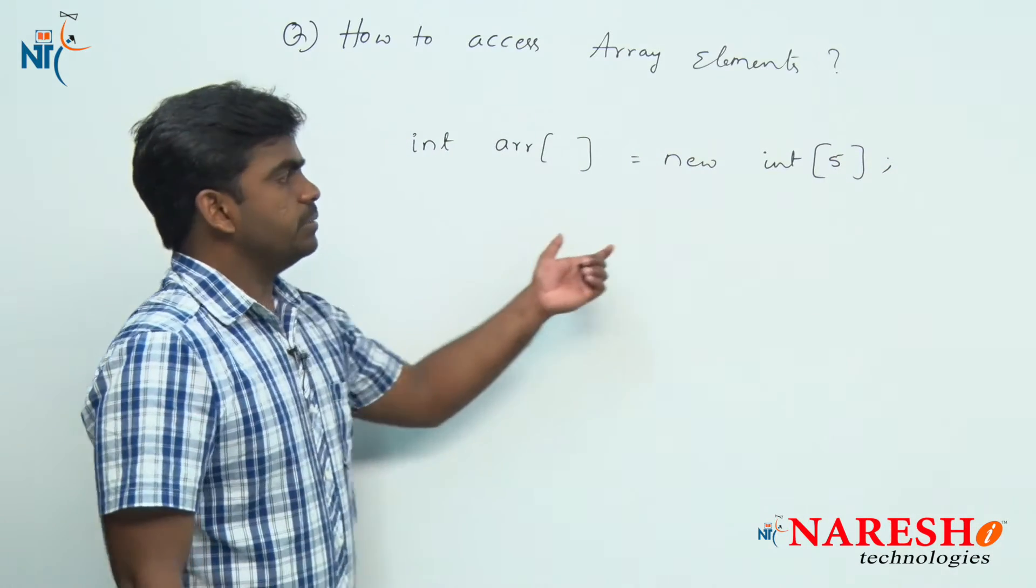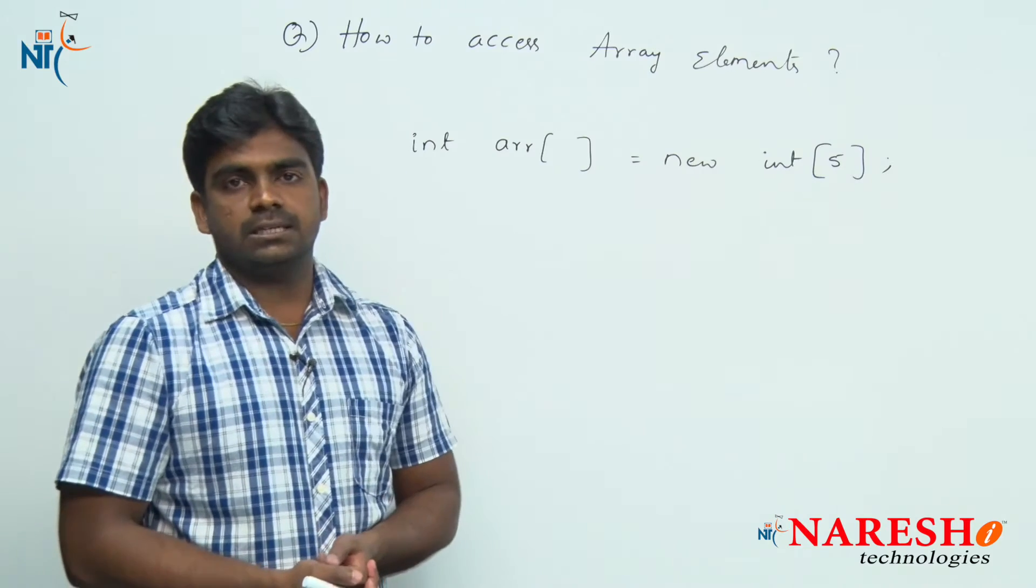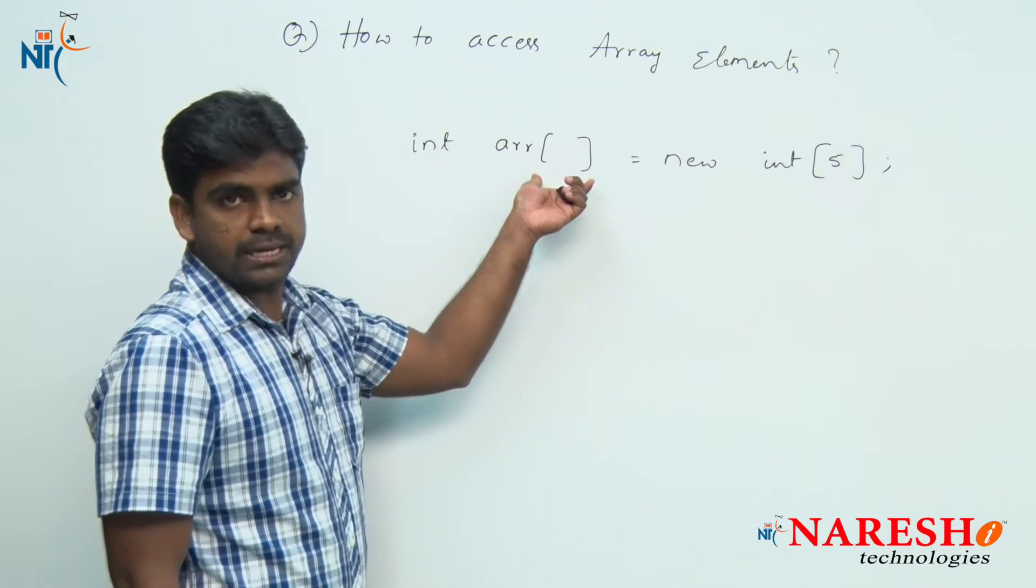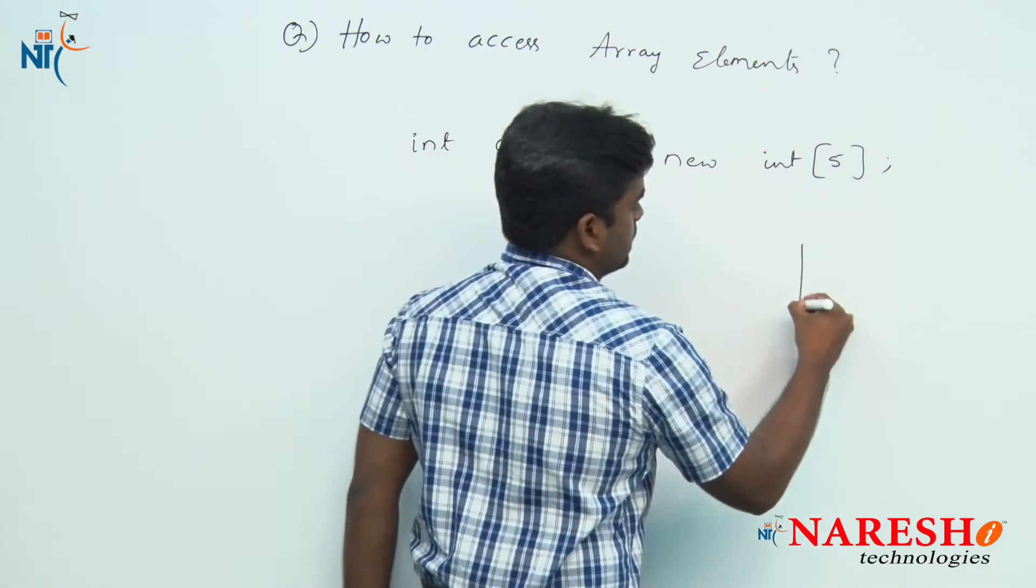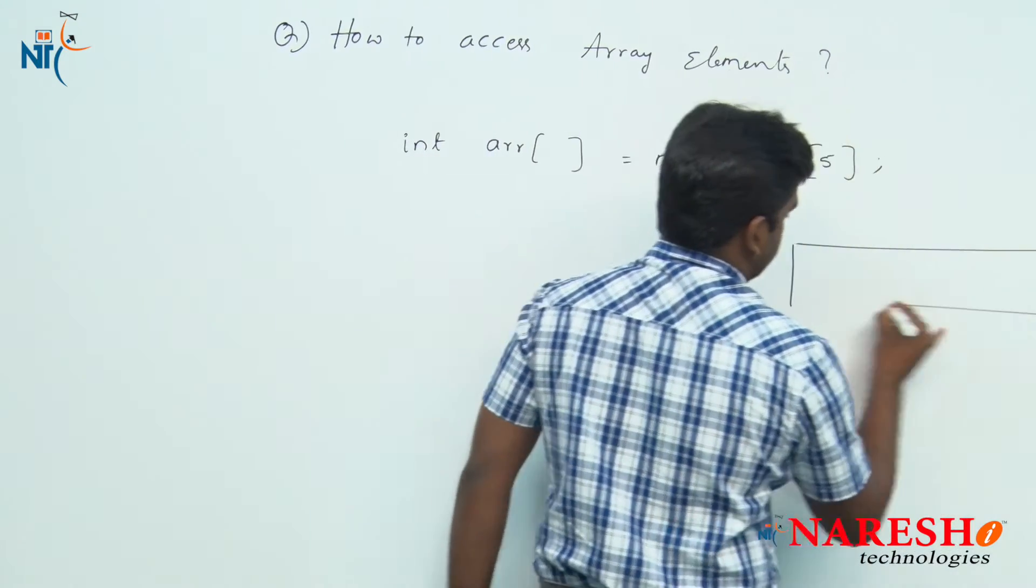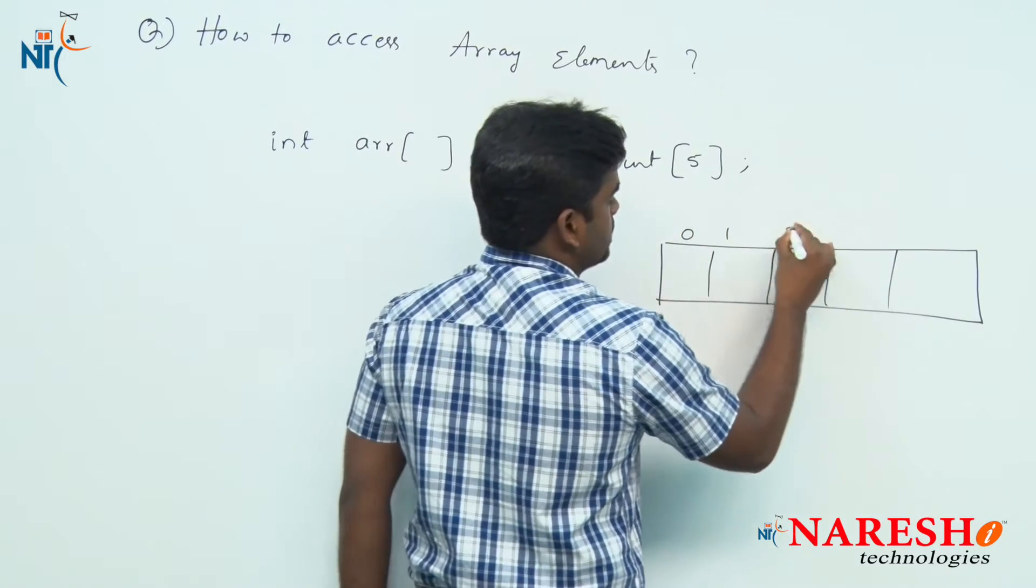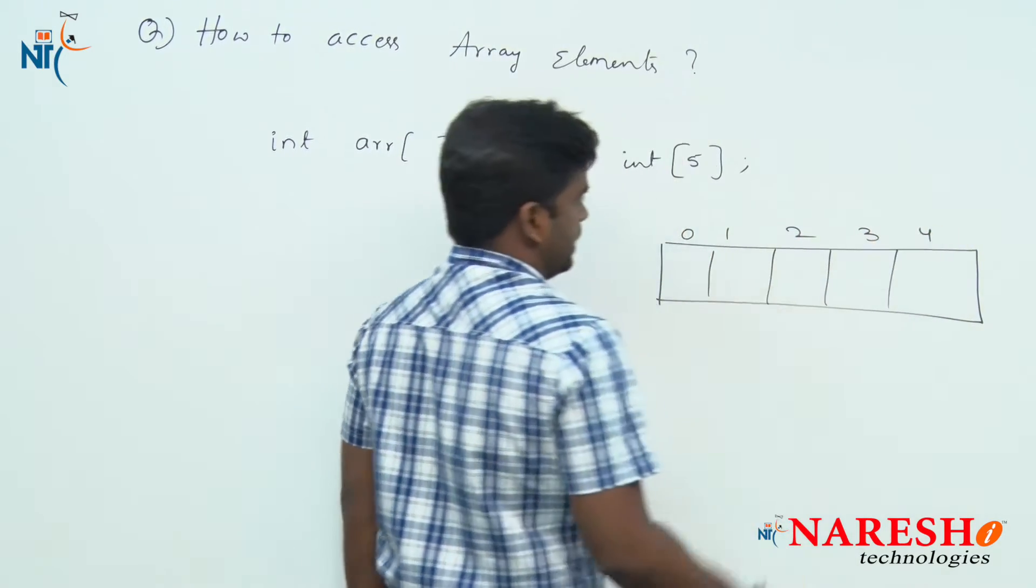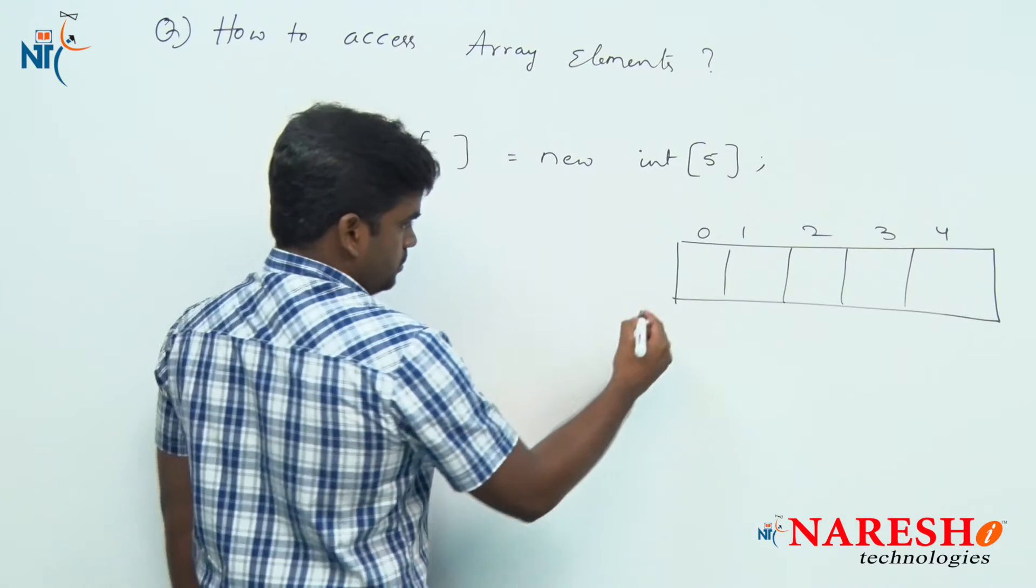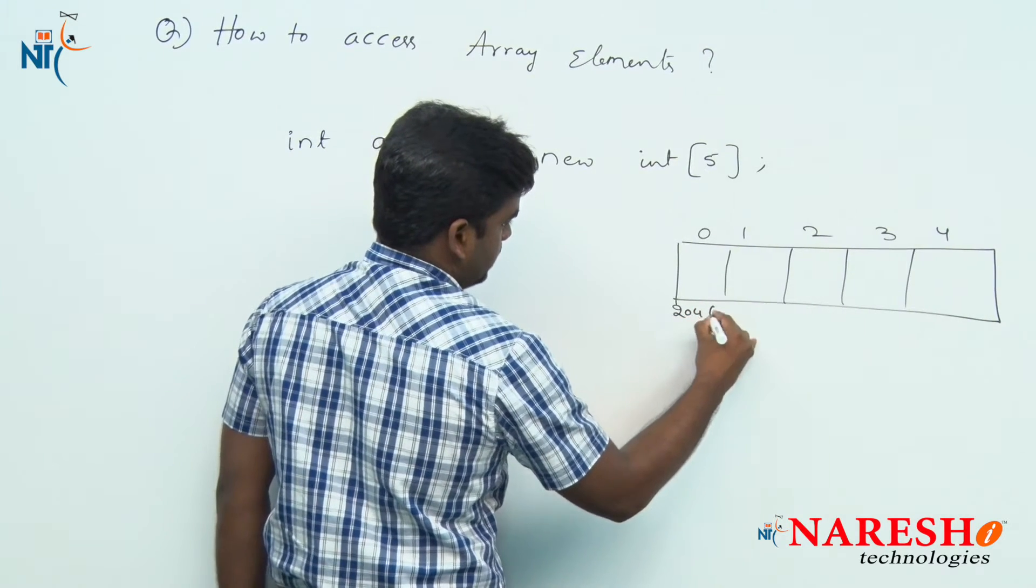Either we can read the elements into this array. ARR gets memory allocation, and here these are index values. The base address will be collected into ARR array variable - array variable always holds a base address only.